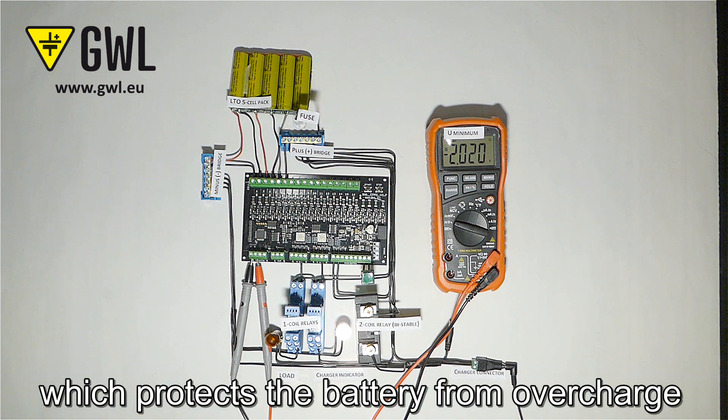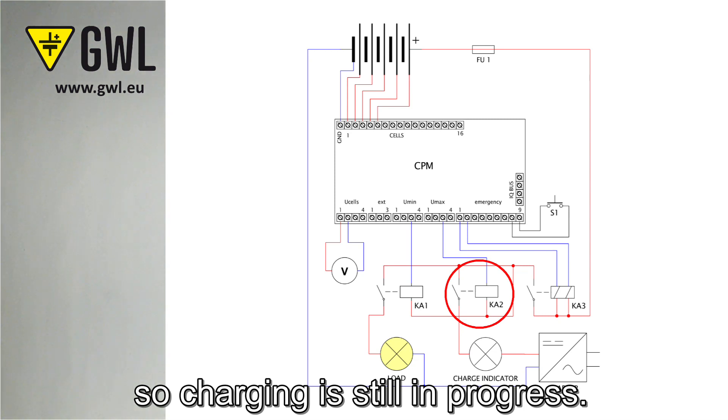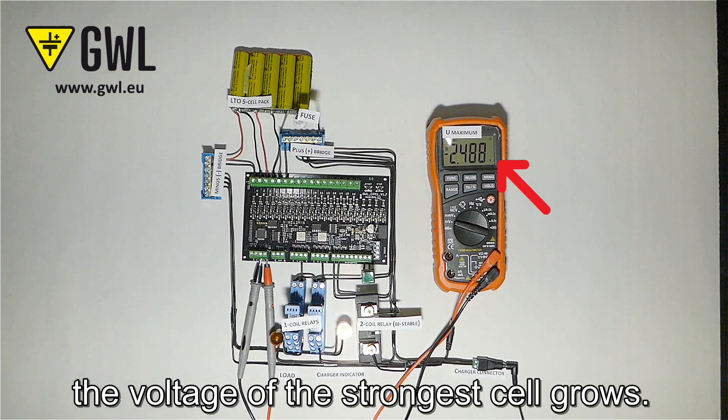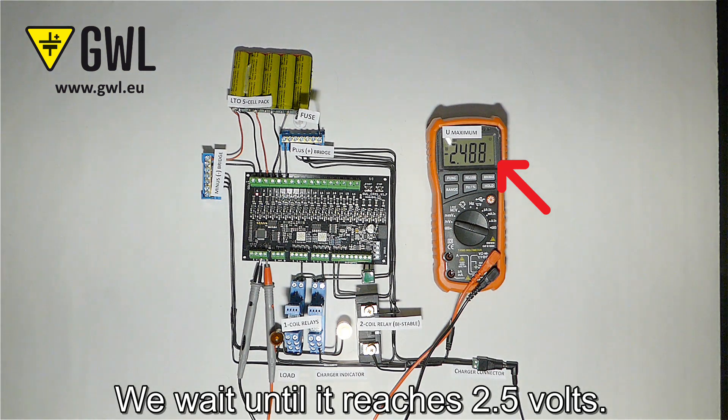The U-max relay which protects the battery from overcharge remains on so charging is still in progress. As you can see the voltage of the strongest cell grows. We wait until it reaches 2.5 volts.